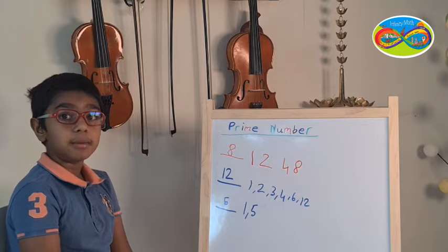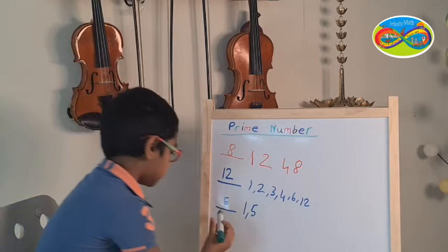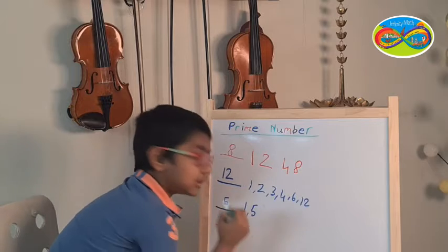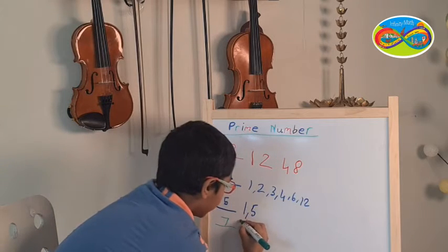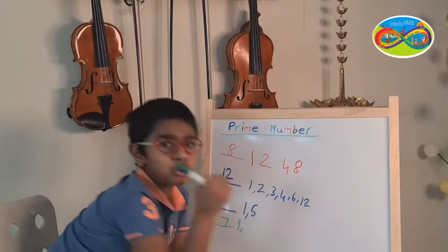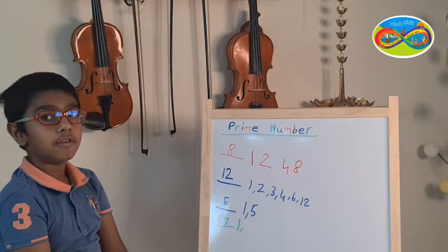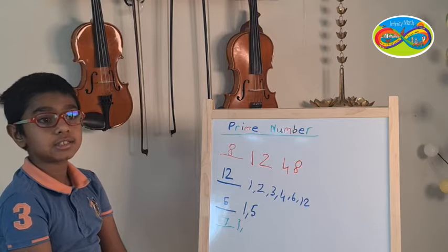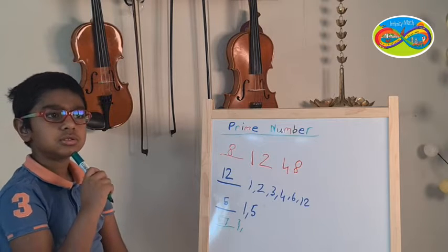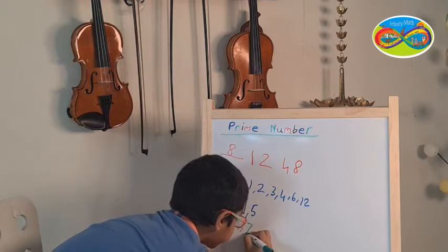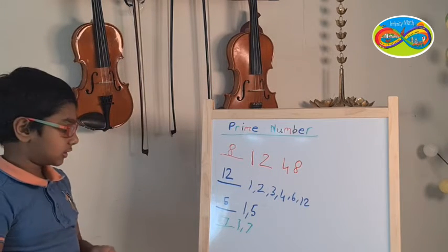Now let's use the number 7. 7. So let's see the factors. 1, yes. 2, no. 3, no. 4, no. 5, no. 6, no. 7, yes. So 7 has only 2 factors.